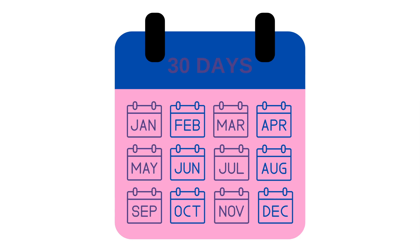However, one month would have to be shorter than the others, so he decided it would be February, since it holds less significance due to the lack of holidays or religious ceremonies associated with that period. He also added leap years to better synchronize the calendar with the solar year, which made February have 29 days in a regular year and 30 days in a leap year.